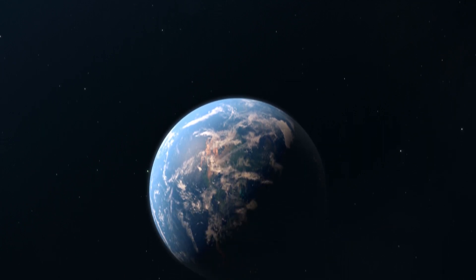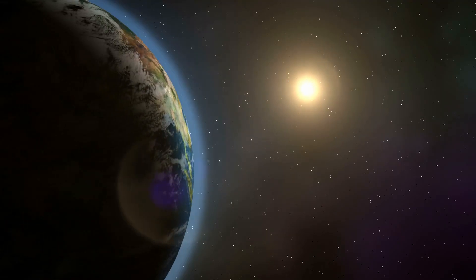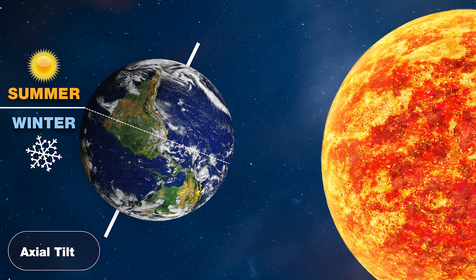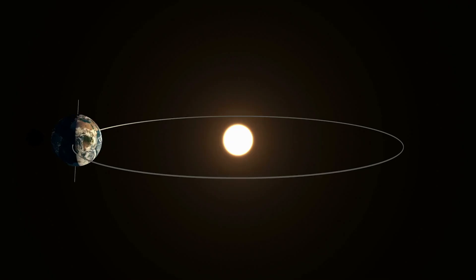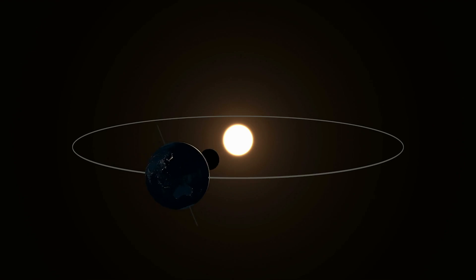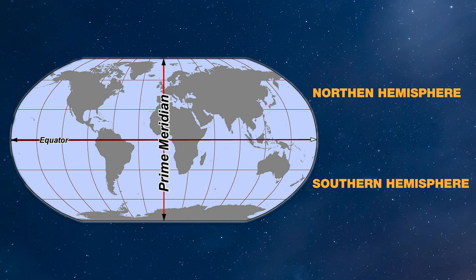Earth is slightly tilted on its axis as it rotates around itself and orbits around the sun. Seasons occur due to the tilt of the axis. Different parts of the Earth receive the sun's most direct rays throughout the year. As a result, the Southern Hemisphere and the Northern Hemisphere experience different seasons at one time.